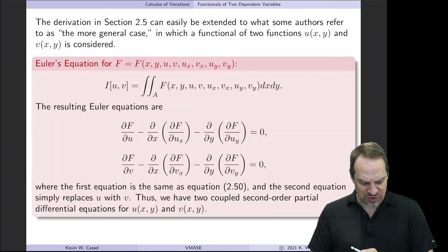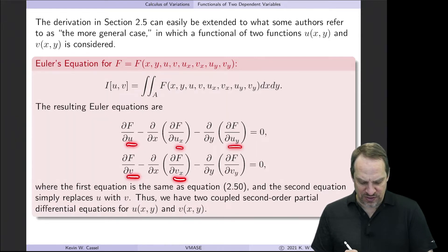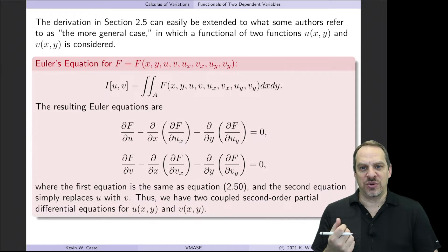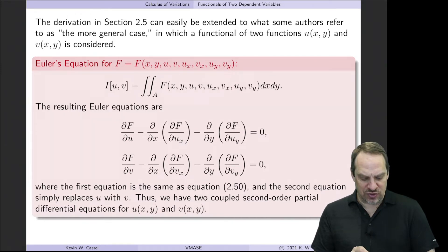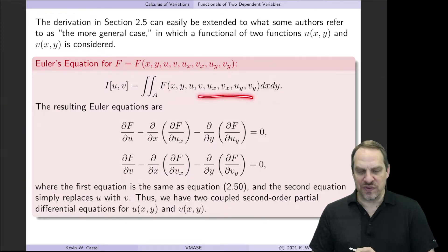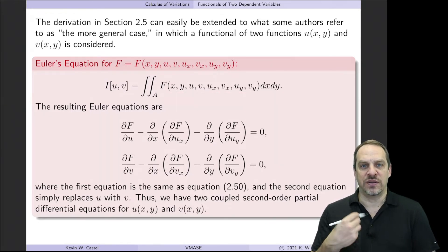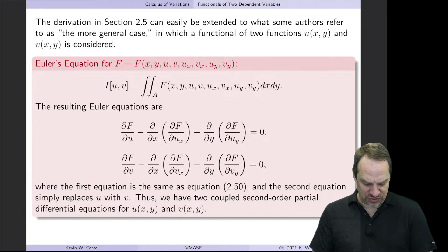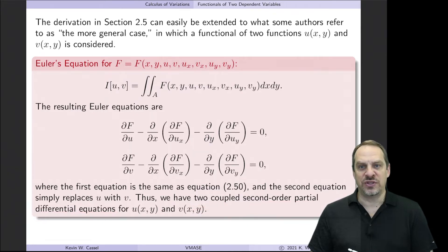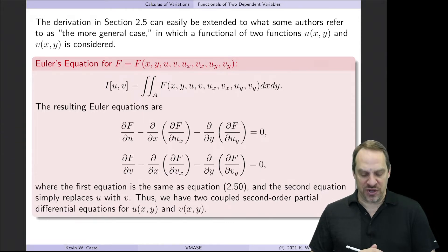Now we simply have an additional Euler equation where the u's have been traded out for v's. So for any number of dependent variables, you get that same number of Euler equations corresponding to the number of independent variables and the orders of the derivatives on the dependent variables. And those equations are all coupled, giving us two coupled second-order partial differential equations for our two two-dimensional dependent variables.